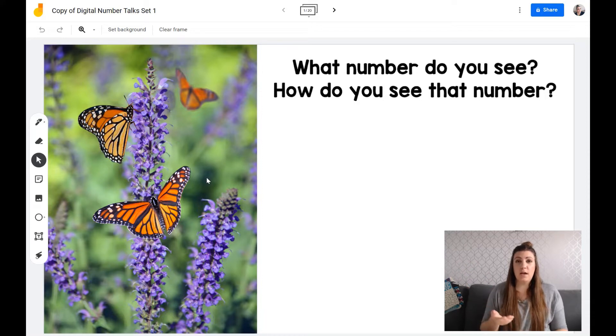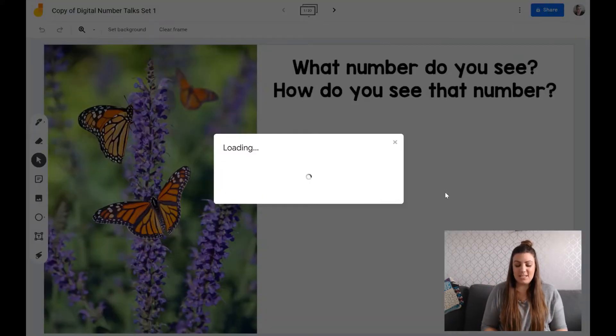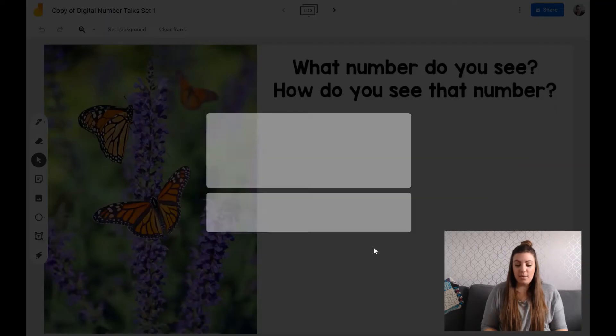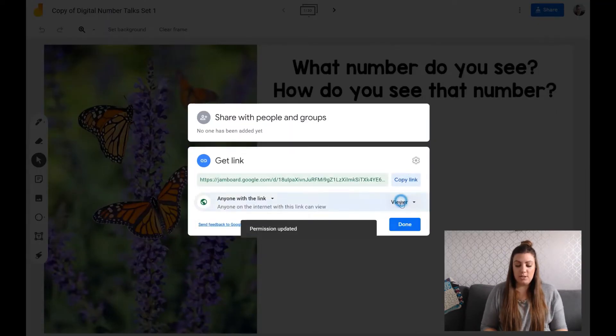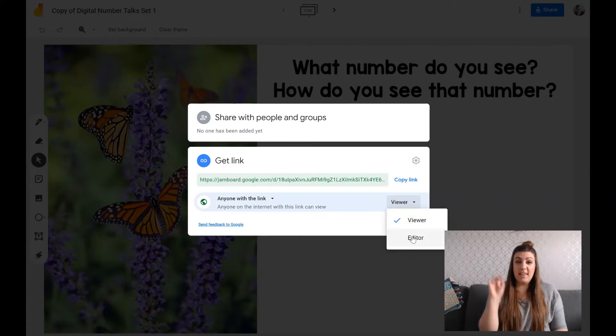You can go one of two ways. You can have this as something that students can manipulate themselves and you can give them editing access to it by sharing it with them and giving them change to anyone with the link and then changing it over here to editor. And then that way they can add their own thinking, math thinking to the Jamboard themselves. Or once you call on students to share their math thinking, you can add it yourself.